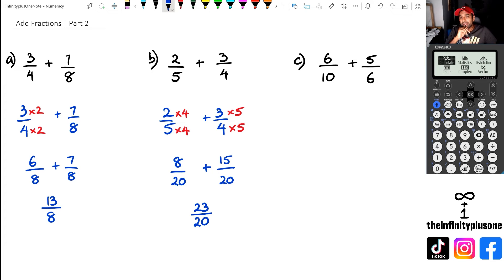So I mean, like question C is a great example. Like if you think about it, you've got 10 and six, and automatically you're thinking, well, I could just go 10 times six, and six times 10, should be fine. But we also know that the lowest common multiple between 10 and six is actually 30.